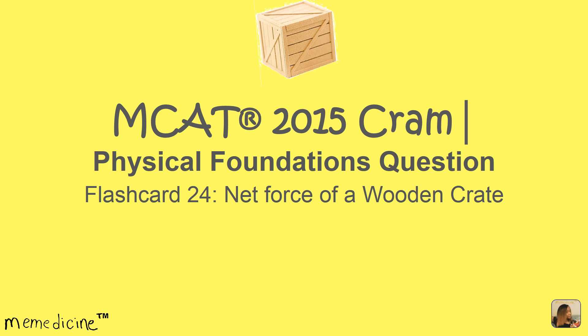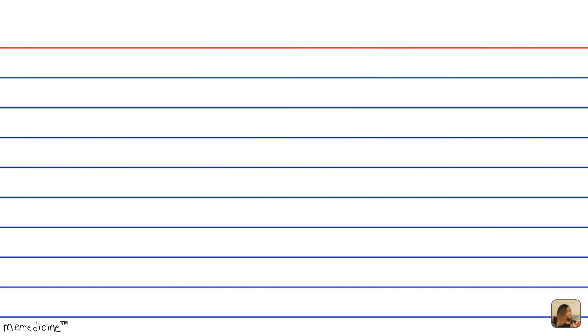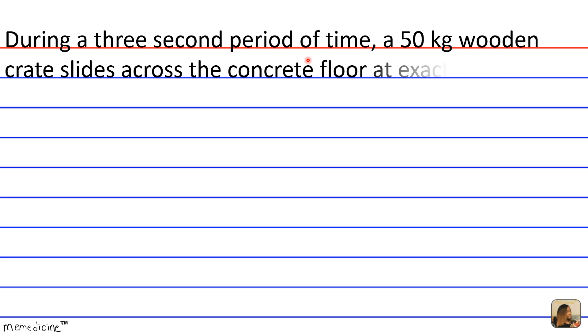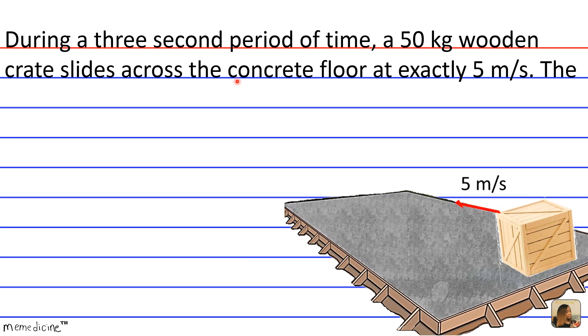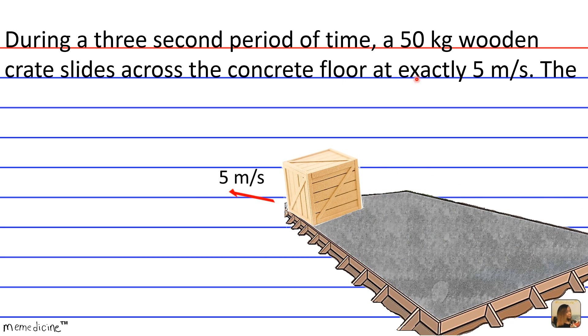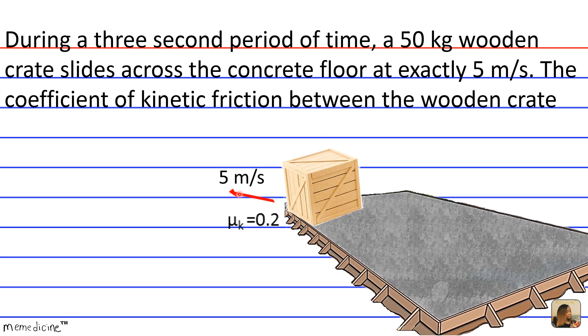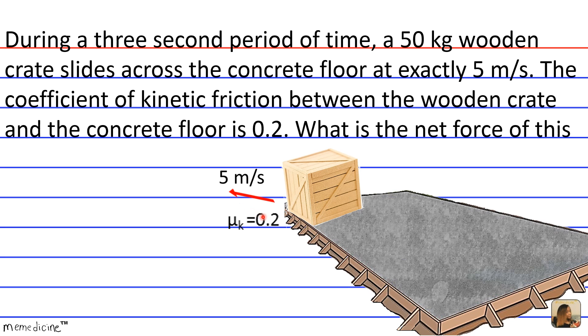All right, let's delve into the question. During a three-second period of time, a 50-kilogram wooden crate slides across the concrete floor at exactly 5 meters per second. The coefficient of kinetic friction between the wooden crate and the concrete floor is 0.2. What is the net force of this crate during the three-second period?